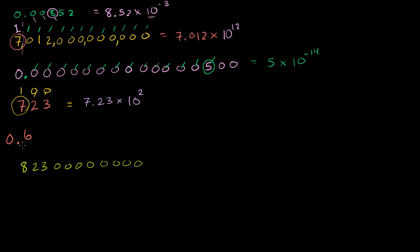Now for 0.6, what's our first non-zero term? It's that one right there. So it's going to be 6 times — and how many terms do we have to the right of the decimal? We have only 1. So it's 6 times 10 to the minus 1. And that makes a lot of sense, because that's essentially equal to 6 divided by 10, and 10 to the minus 1 is 1 over 10, which is 0.6.